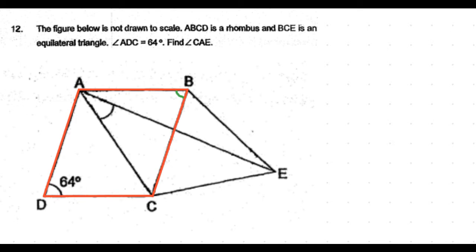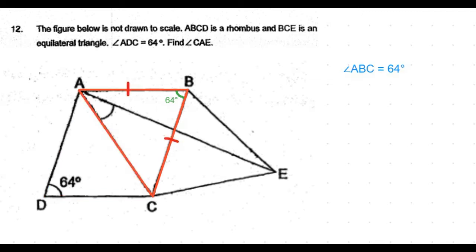Now consider triangle ABC. This is an isosceles triangle. AB is equal to BC because AB and BC are part of the rhombus ABCD, so all the sides in the rhombus are equal. Therefore, AB equals BC.